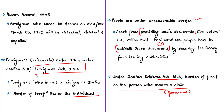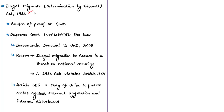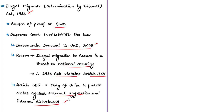To address this, the central government framed the Illegal Migrants Determination by Tribunal Act in 1983, shifting the burden of proof to the government from the individual. However, this legislation was struck down in 2005 by the Supreme Court in the Sarbananda Sonowal versus Union of India case, declaring it unconstitutional. The Supreme Court said illegal migration into Assam posed a threat to national security and that the 1983 act was violative of Article 355 of the Indian Constitution, which states it shall be the duty of the Union to protect every state against external aggression and internal disturbance. Based on this judgment, the burden of proof again returned to the individual.